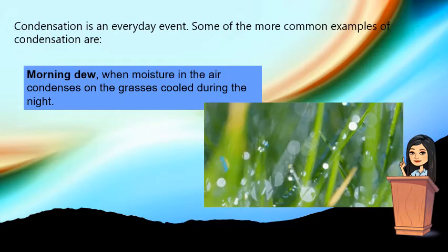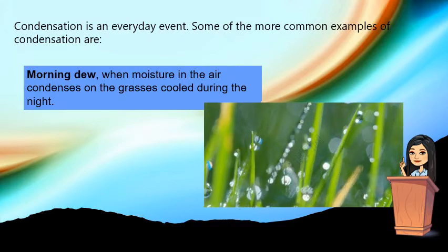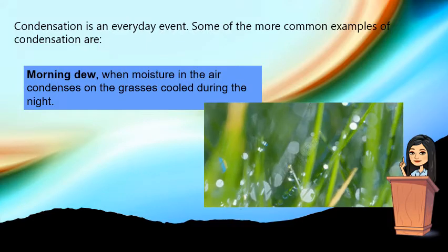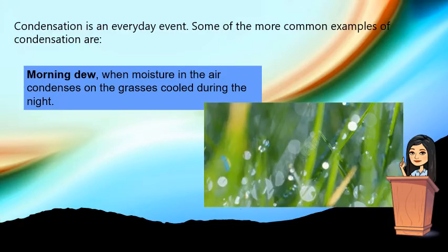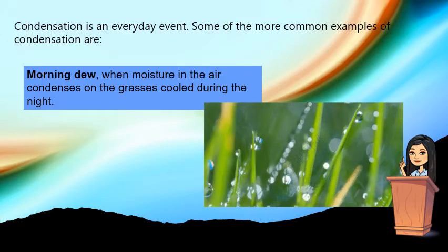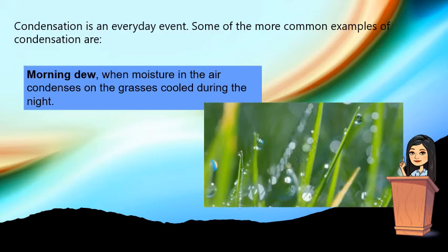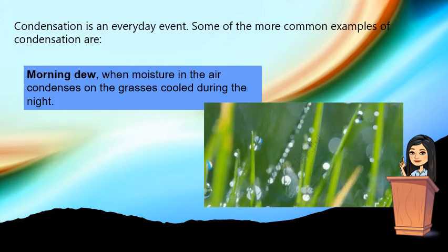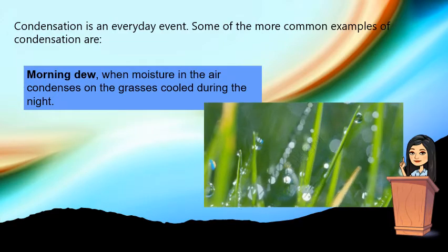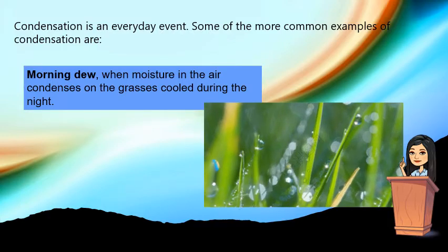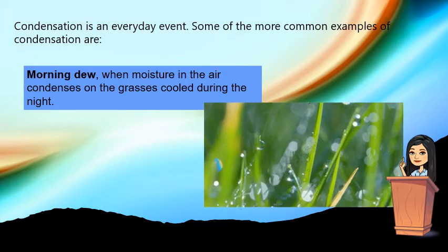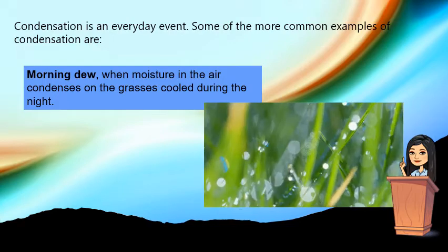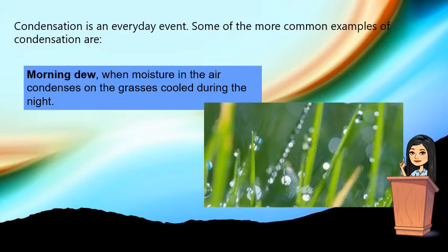Condensation is an everyday event. Some of the more common examples of condensation include morning dew. It takes place when moisture in the air condenses on the grass that has cooled during the night. So morning dew is an example of condensation.